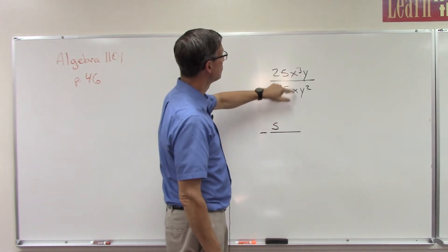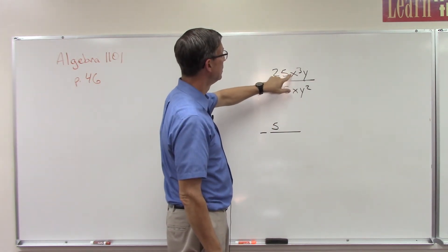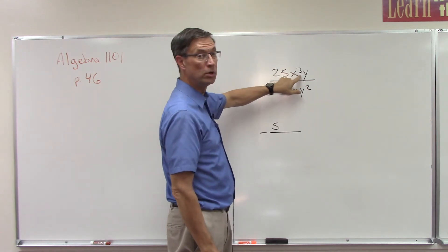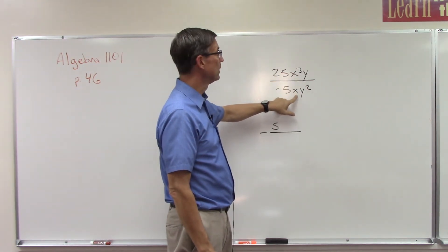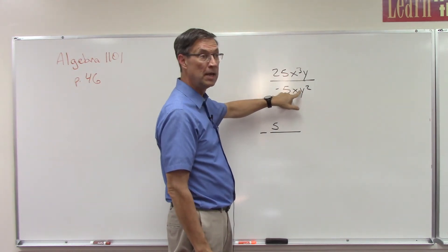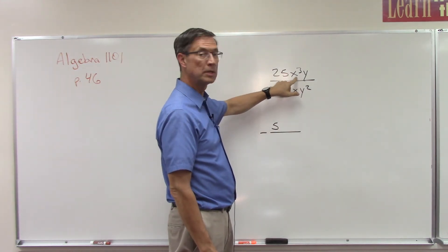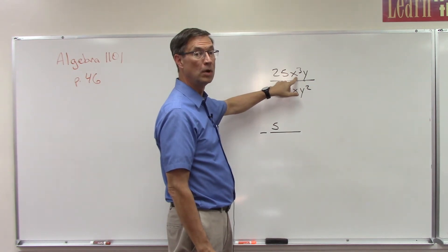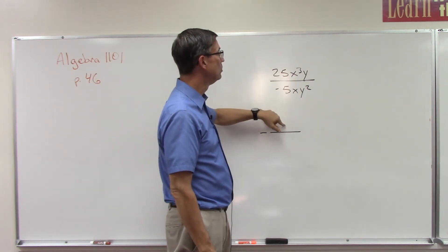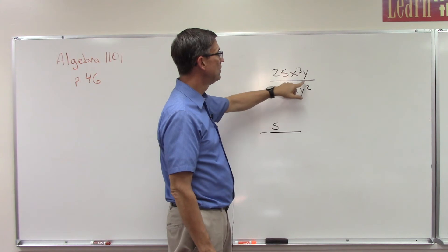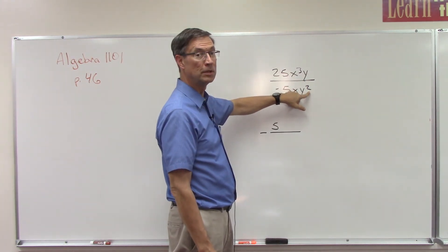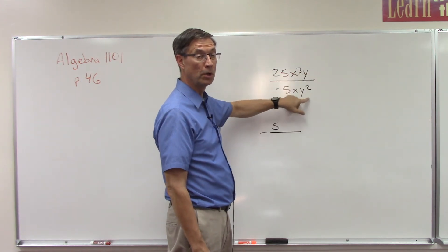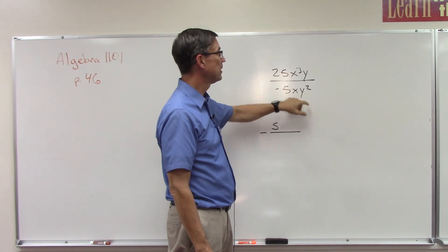We're going to subtract 3 minus 1, and where was the larger one? It was on the top, so that's how we know that x squared will be in the numerator. Now I want you to finish this one - do the same thing with y, but notice we're going to subtract the exponents here: 2 minus 1. But the larger one was on the bottom, so that's your clue where that answer is going to go.